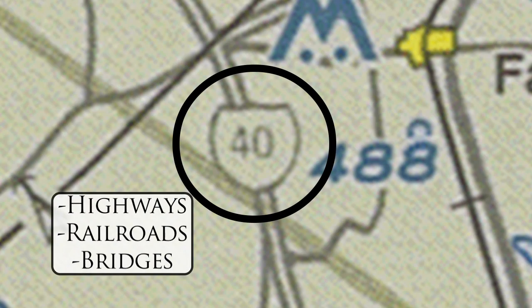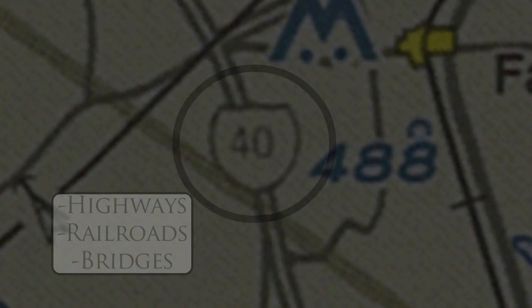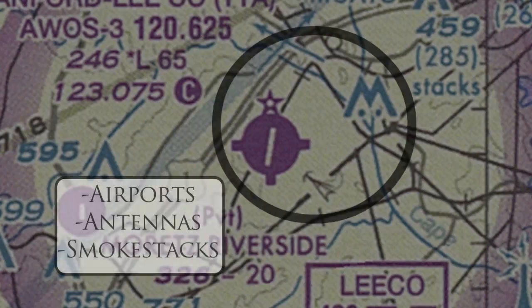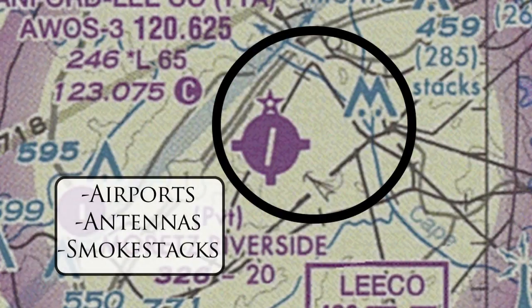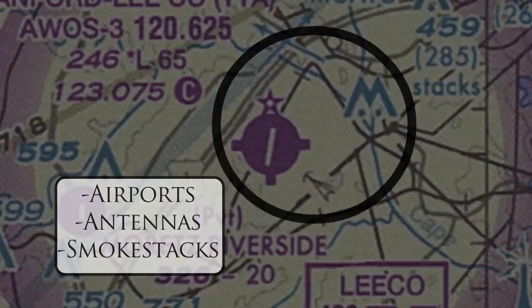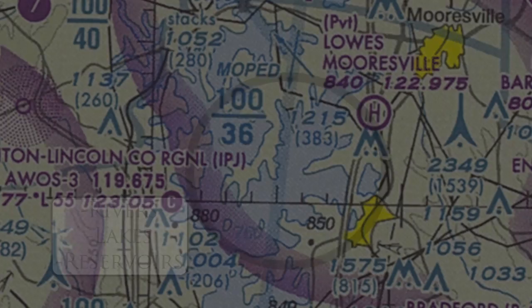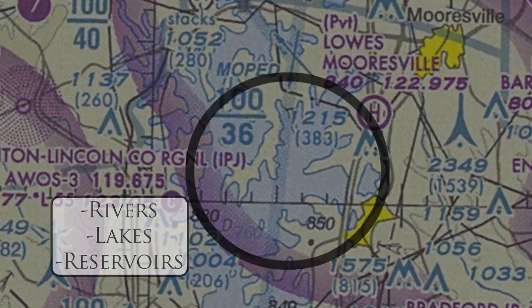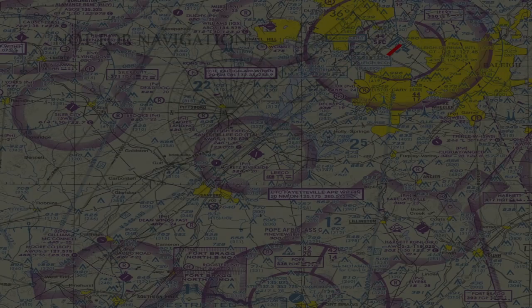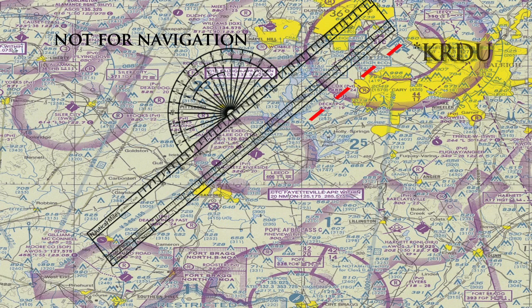Now that we have that covered, let's talk a little bit about checkpoints. Check examiners love to scrutinize how far apart your checkpoints are spaced. We recommend placing checkpoints anywhere from 10 to 15 nautical miles apart. For our first checkpoint, we use a lake — it's big, filled with water, and just plain hard to miss.